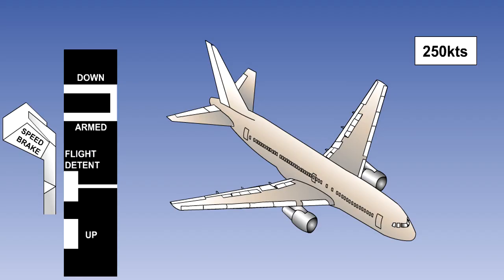Most spoiler systems have a blow-back facility, whereby if the spoiler panels are raised at high speed, the air load will overcome the hydraulic jacks and push the panels down. This is progressive with increasing airspeed, until eventually the panels are blown down to the fully retracted position. This applies when the panels are being operated by the speed brake lever or by the roll assist mechanism, the latter reducing the sensitivity of the aircraft in roll with increasing speed.